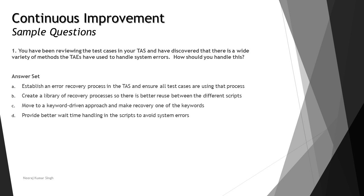Looking at the first question: you have been reviewing the test cases in your TAS and have discovered that there is a wide variety of methods the TAEs — that is, test automation engineers — have used to handle system errors. How should you handle this? In this question, they are asking what are the best practices to address such scenarios in real time.